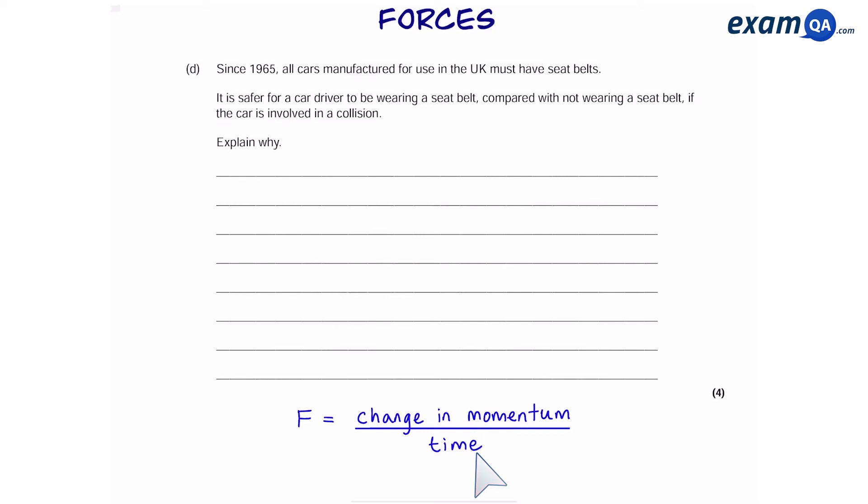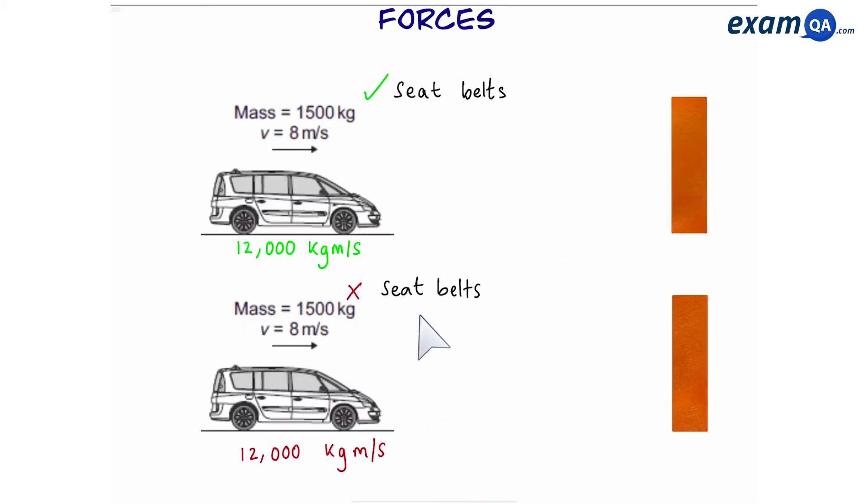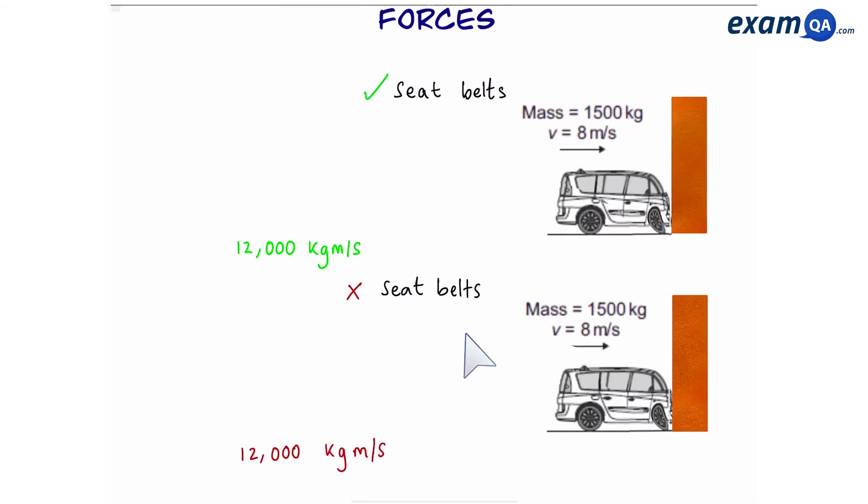However, we're just going to use this to explain what's happening in the scenario. So imagine we have two cars, which are both moving at the same speed and have the same mass. The only difference is that in the top car, the person is wearing the seatbelt, but in the bottom one, they've decided not to wear their seatbelt. Let's see what happens.